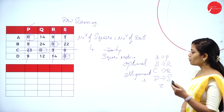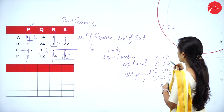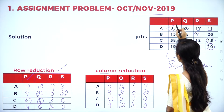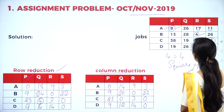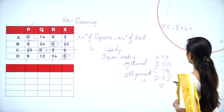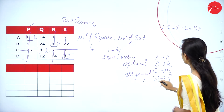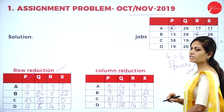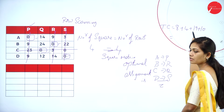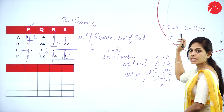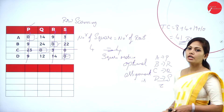Now find the total transportation cost using the original values. A to P is 8; B to R is 4; C to Q is 19; D to S is 10. Adding all values: 10 plus 19 is 29, plus 4 is 33, plus 8 is 41. So 41 is your total cost.